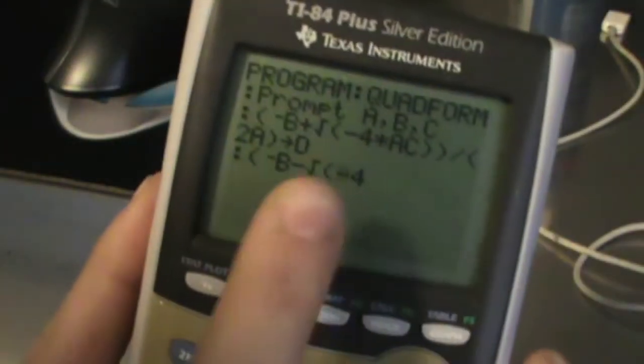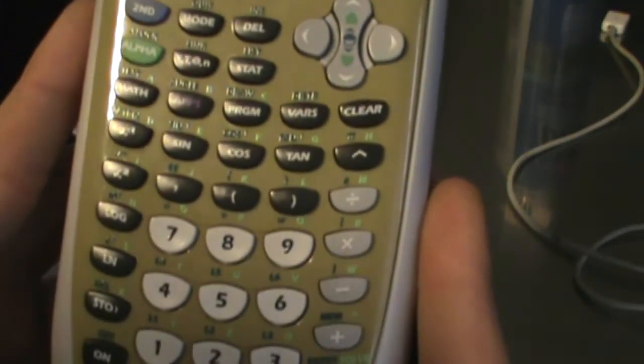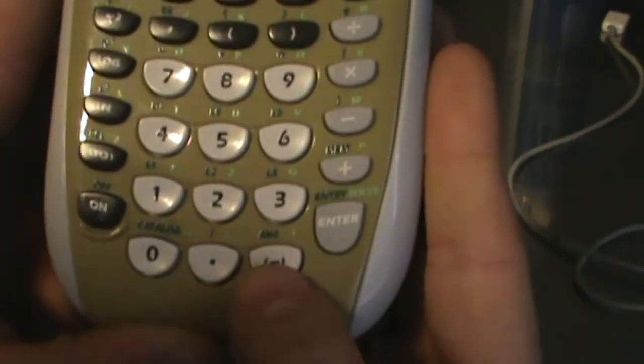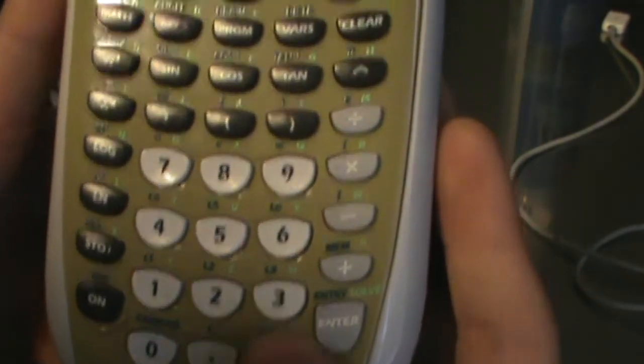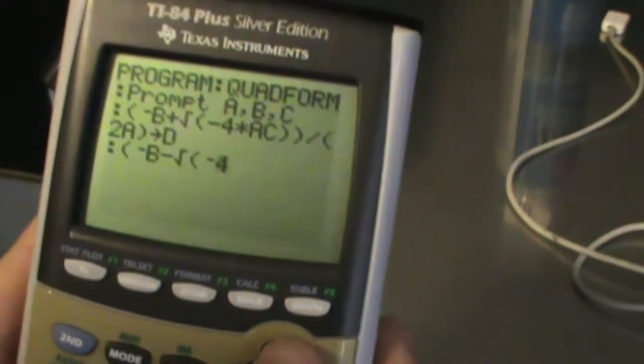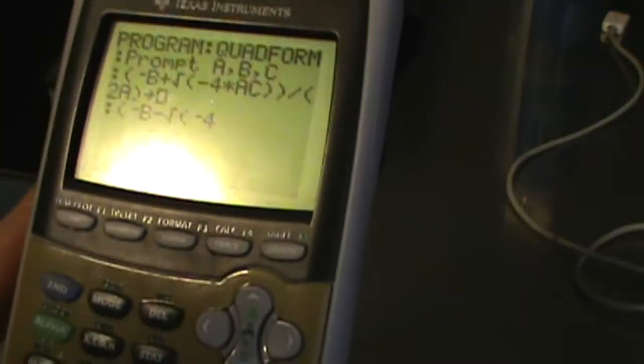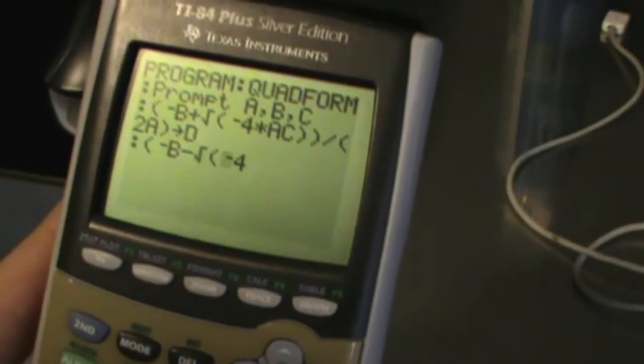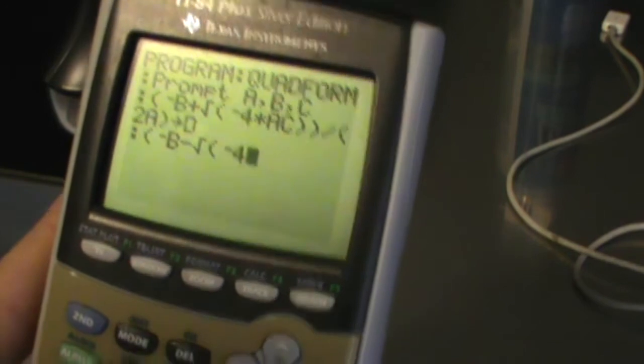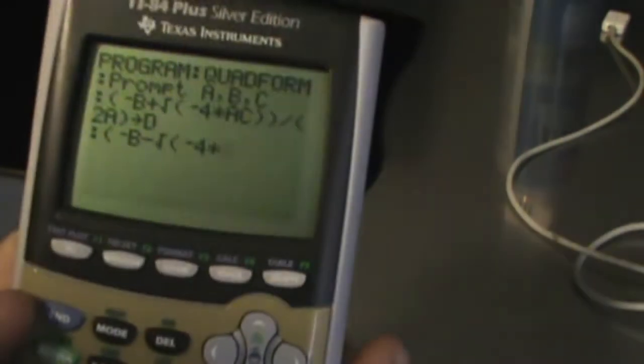when you do the negative right there, don't hit minus. Hit the actual negative button. So don't hit this button, hit this button. Negative 4. And what it will do—it will mess up the entire operation and it won't work.